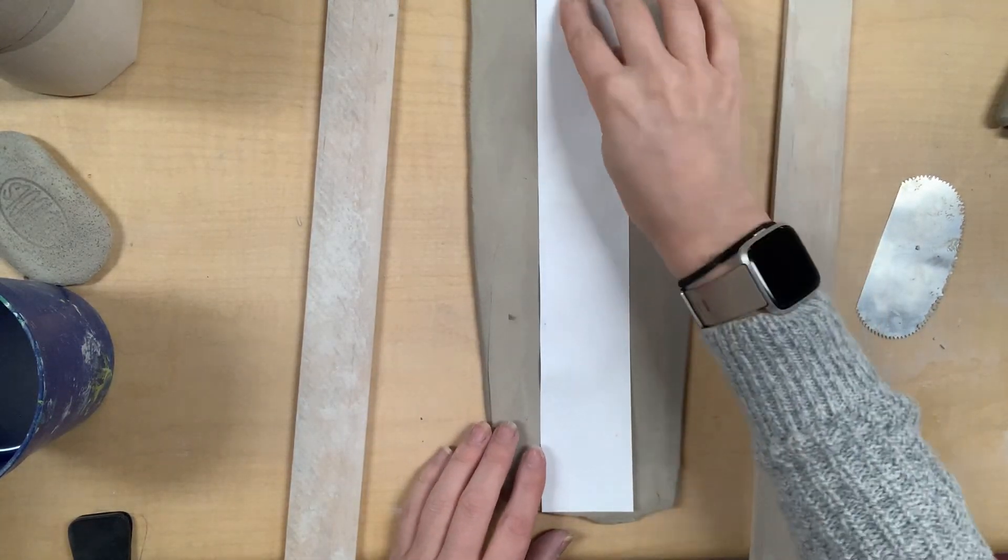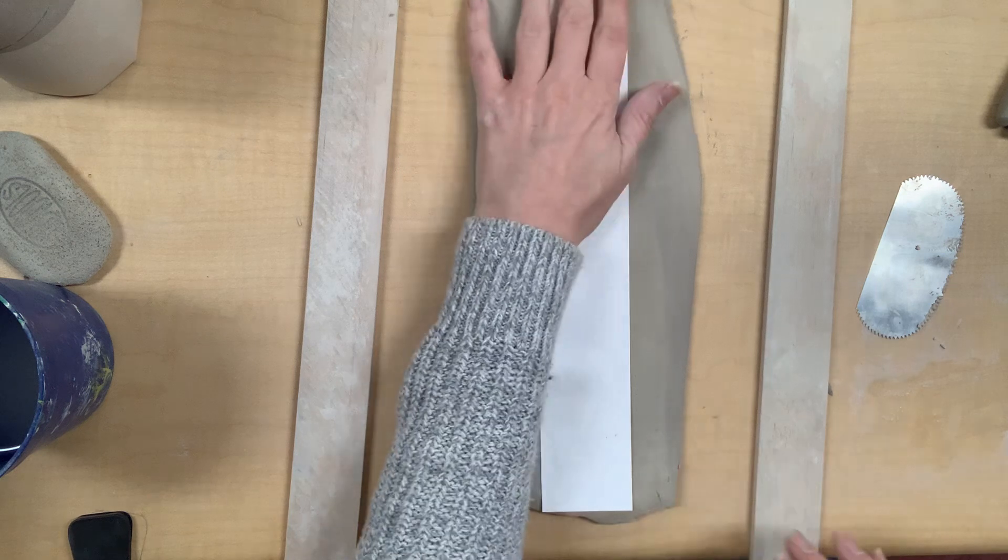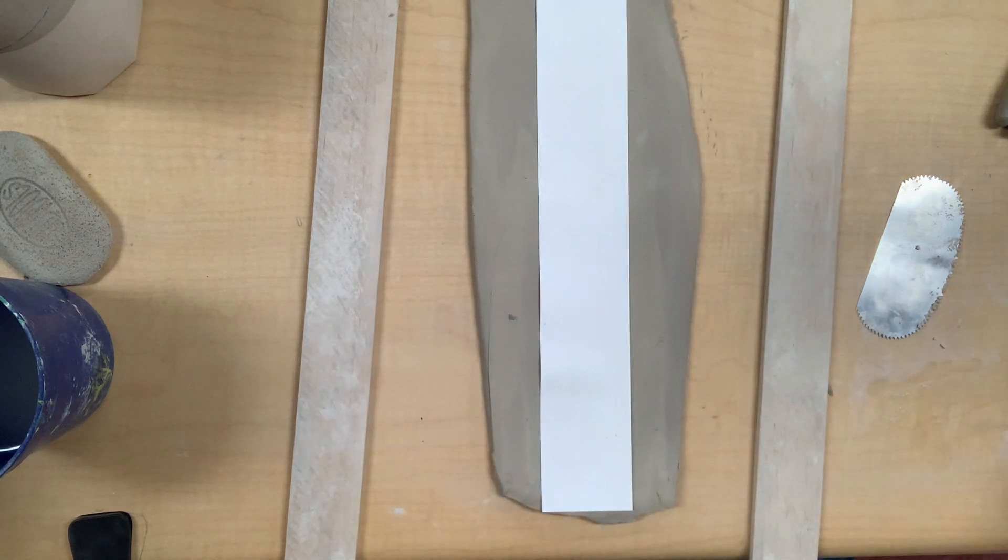So I now have my slab rolled out and I've got my template laid out on top of that slab, just like you've done for slab boxes and other slab construction in the past where you're working with straight edges.